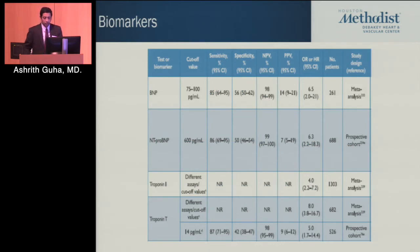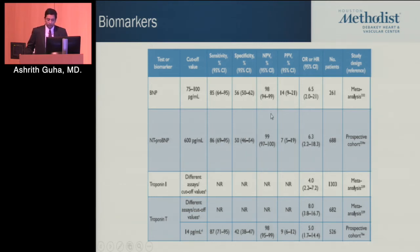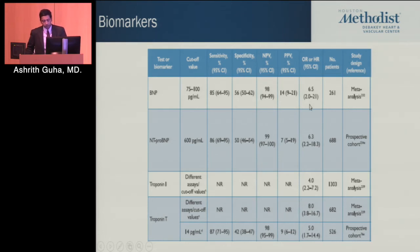Switching to biomarkers — troponins and BNP have both been used. A common theme is that all of these biomarkers have very good negative predictive value: if they are not elevated, these patients tend to do well. But if they are elevated — specifically elevated NT-proBNP or troponin — they are at definitely higher risk, with elevated odds ratios for mortality.